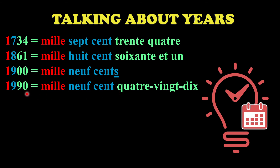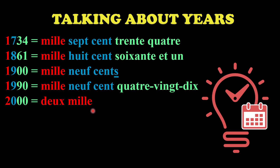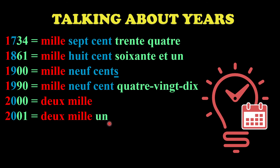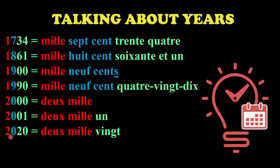For the year 2000, it becomes 'deux mille.' Note that 'mille' stays as 'mille' with no 's' added even though you've gone from one to two. For 2001, it is 'deux mille un.' For the year 2020, you read it as 2000 plus the last two digits: the hundreds is nothing so you don't write anything, and the last two digits 20 give you 'deux mille vingt.'